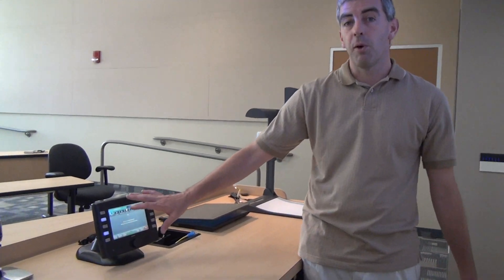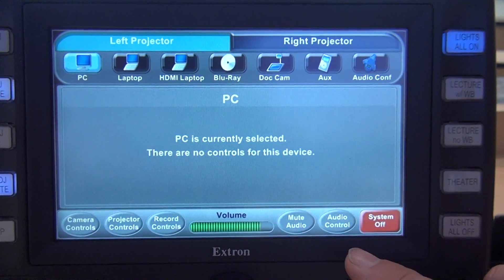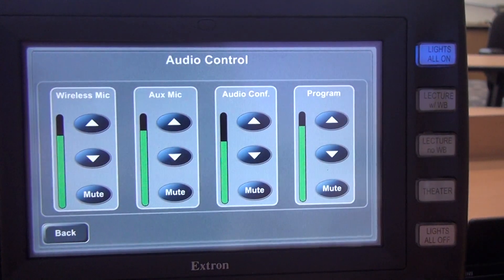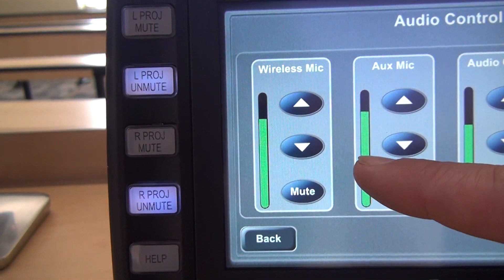Now if my voice is too loud or too soft I can adjust the level of this wireless microphone. If I come over to the touch panel here, you'll see now that we're on our main screen, we can begin to do things with the touch panel. There's an audio control button here on the bottom right. When I press that I get a bunch of options and the wireless microphone level is on the left-hand side.